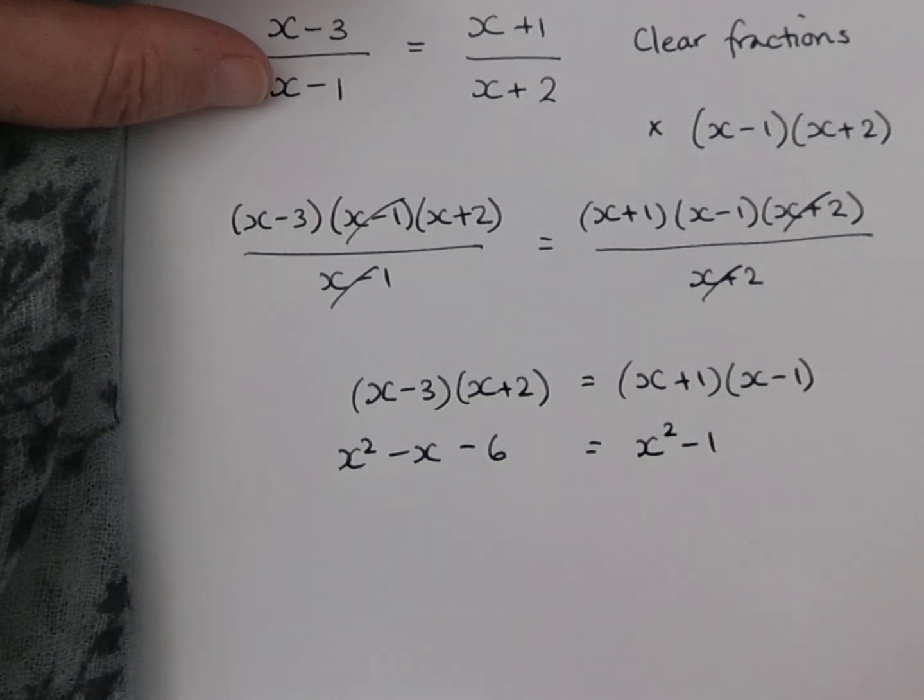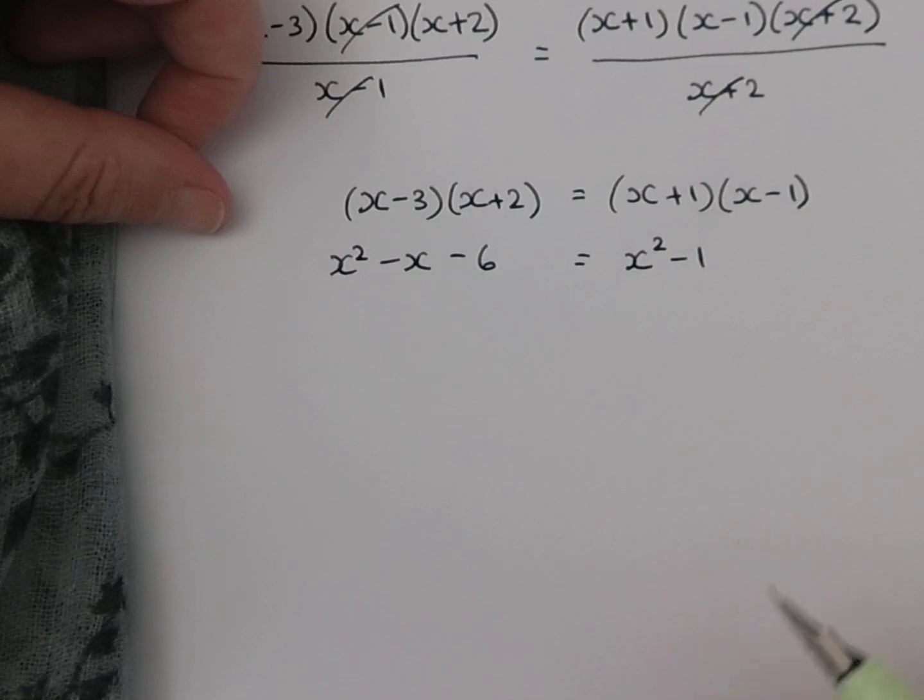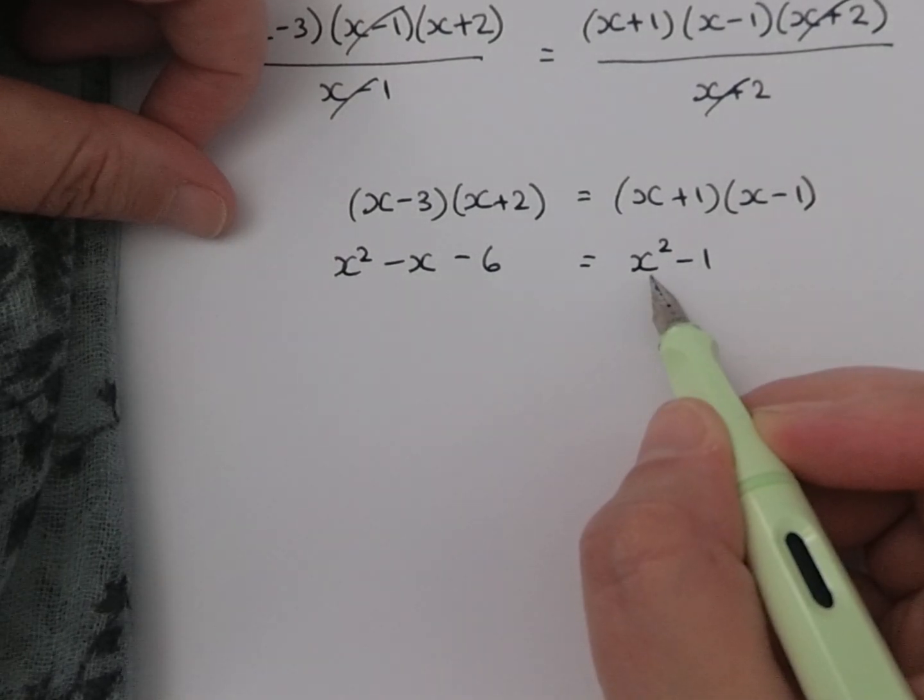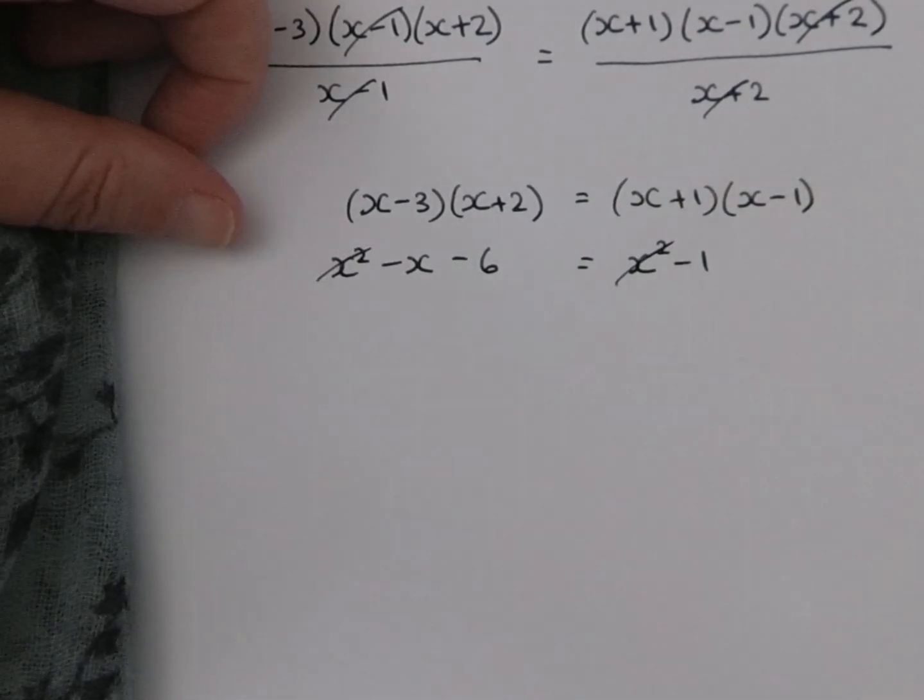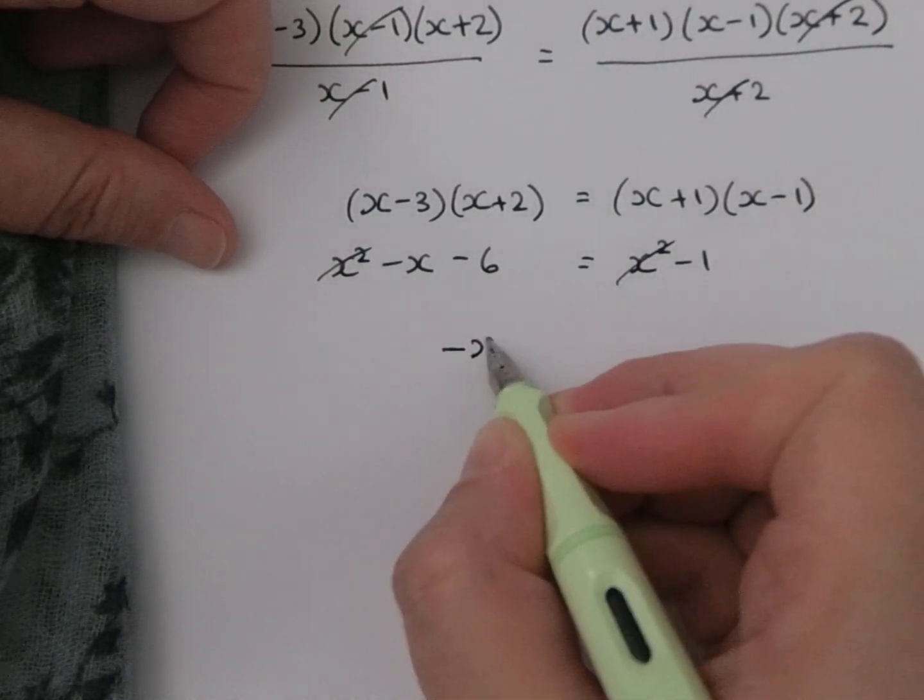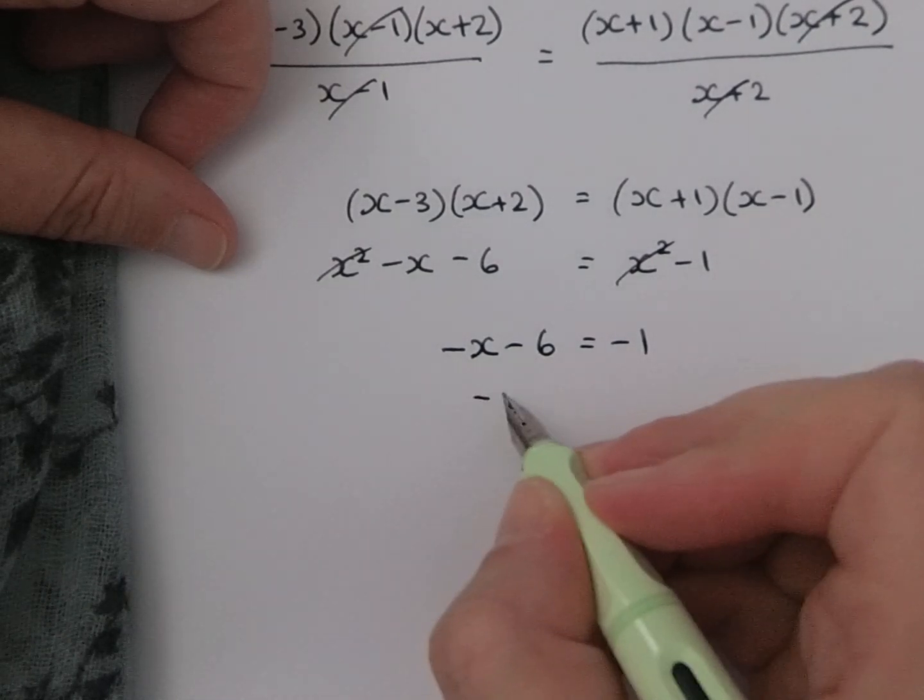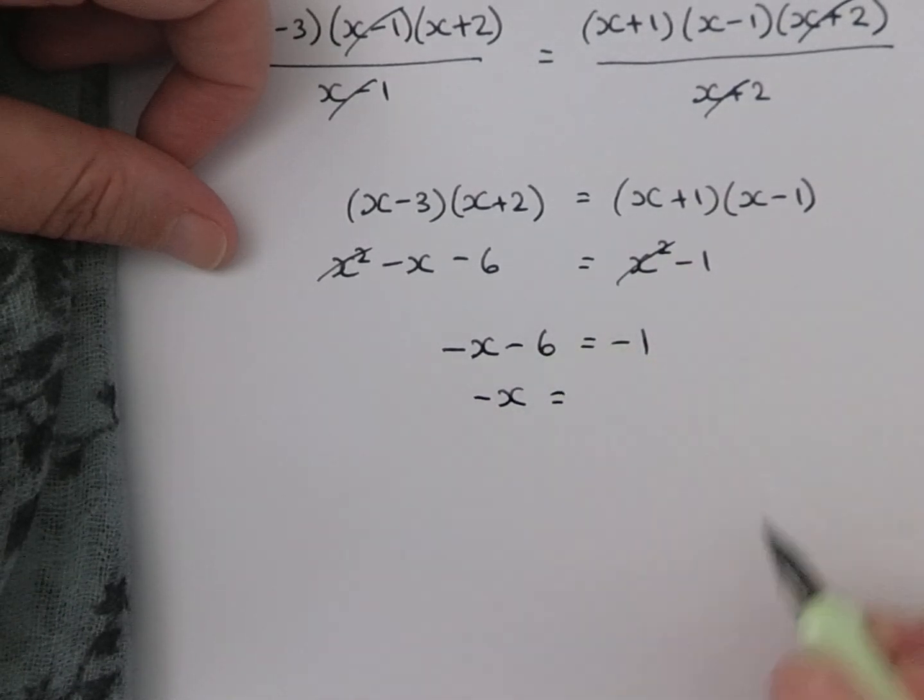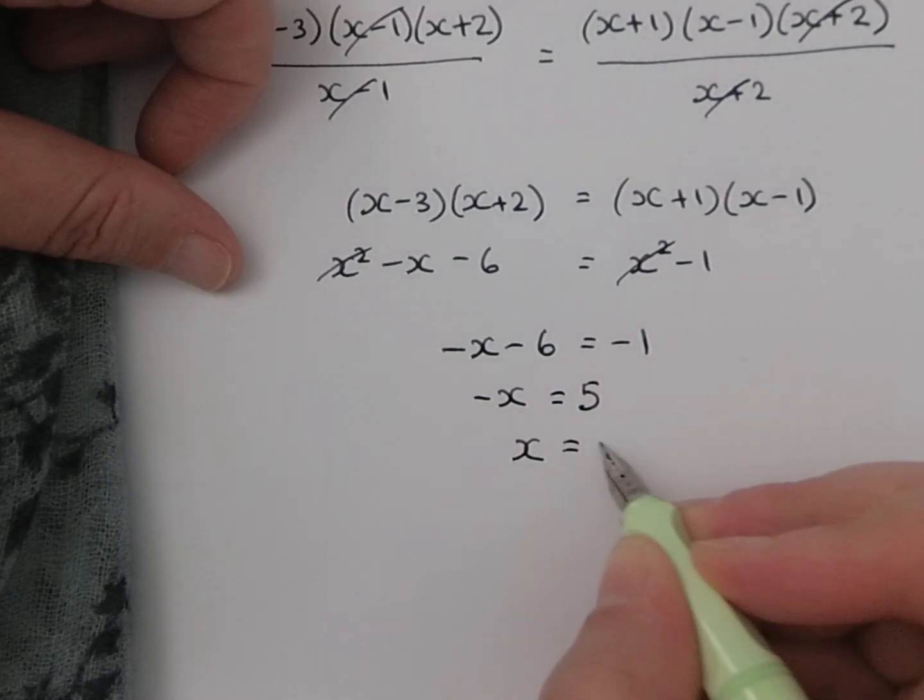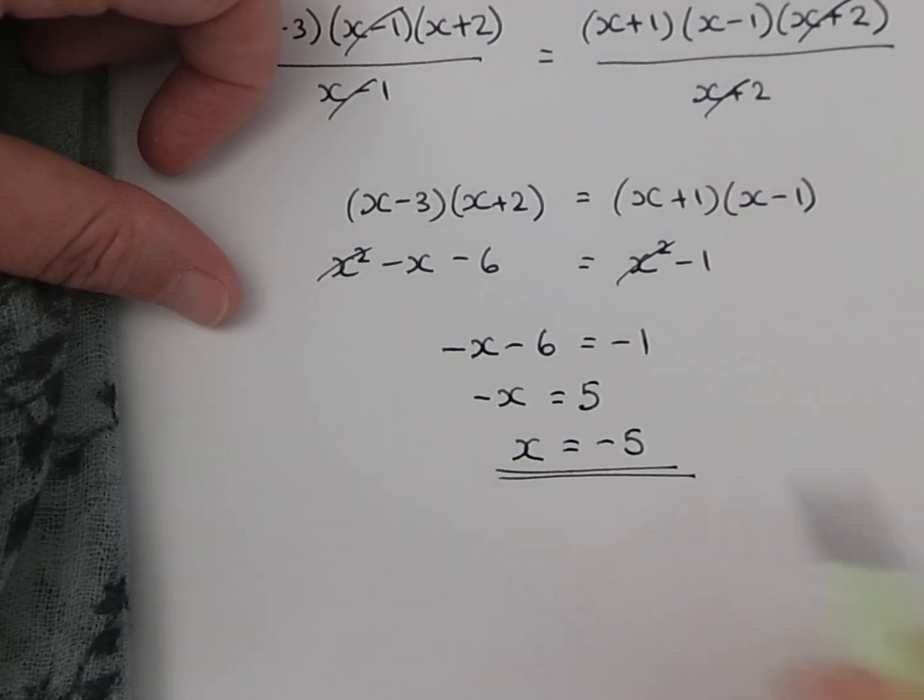Solving. So we want all on one side and we want to collect like terms. Both sides actually have got an x squared, so we could take away x squared from both sides so they would disappear. Now I've got minus x minus 6 equals minus 1. Let me add 6 to both sides. I'll get minus x equals minus 1 plus 6 is 5. So if minus x equals 5, x must equal minus 5 by multiplying both sides by minus 1. And that's our solution.